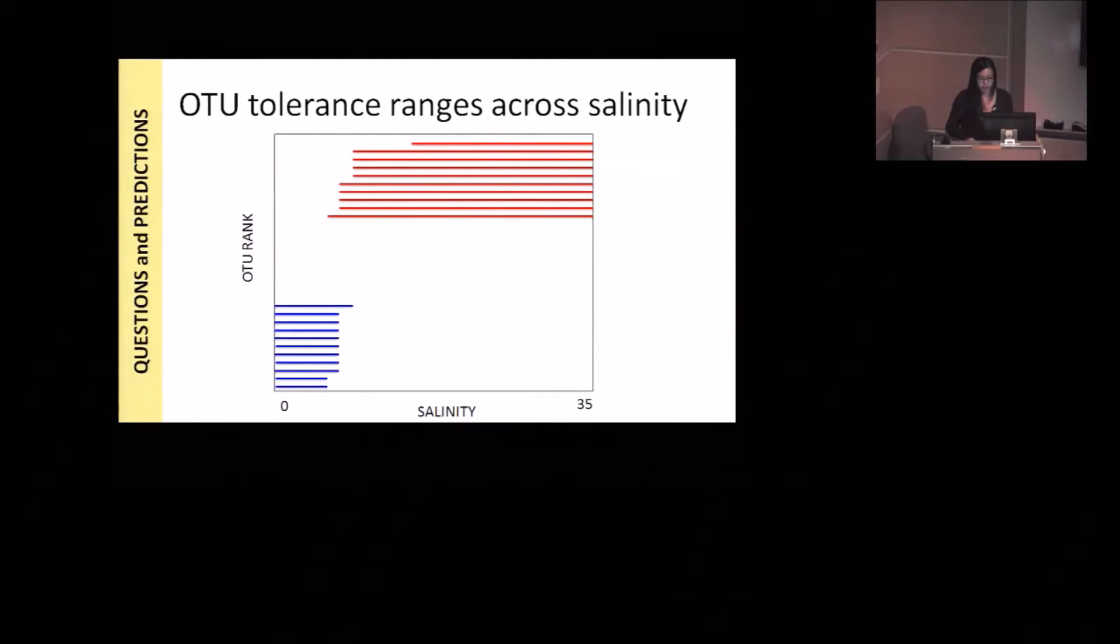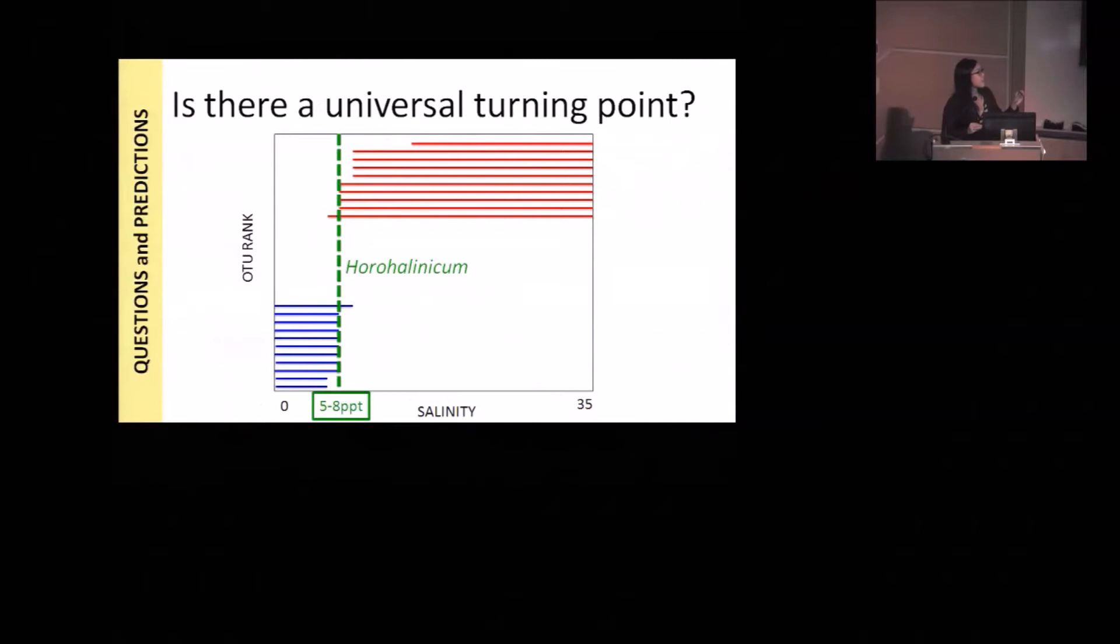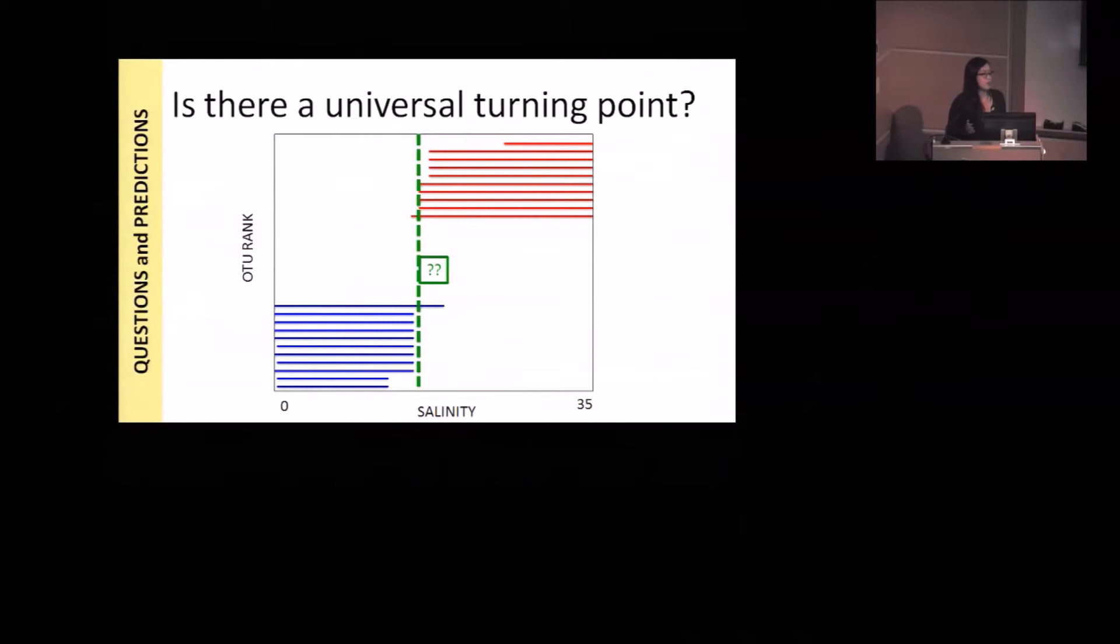The two questions we wanted to ask were, one, is there a universal turning point? Is there some kind of point at which osmoregulation switches? For example, there's this hypothesis that there's this horohalinicum, which is defined as the point where it's difficult to osmotically switch back and forth and maintain yourself. It's thought to be between 5 and 8 parts per thousand. So we thought maybe there would be some kind of binary there, or perhaps it exists at some other location. There's some other point at which taxa tend to turn over.